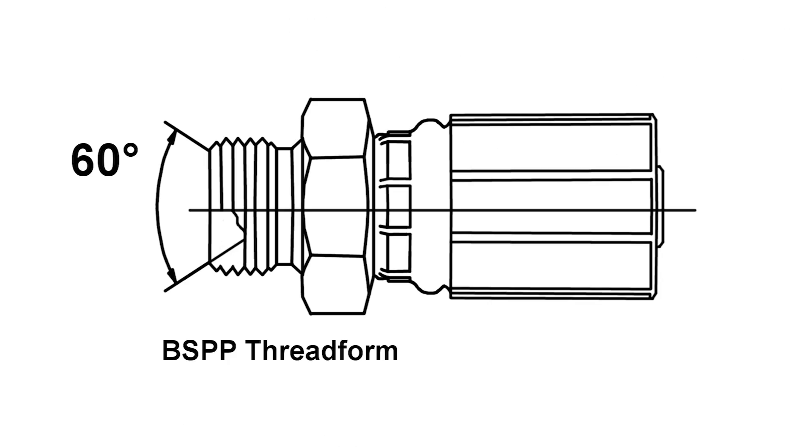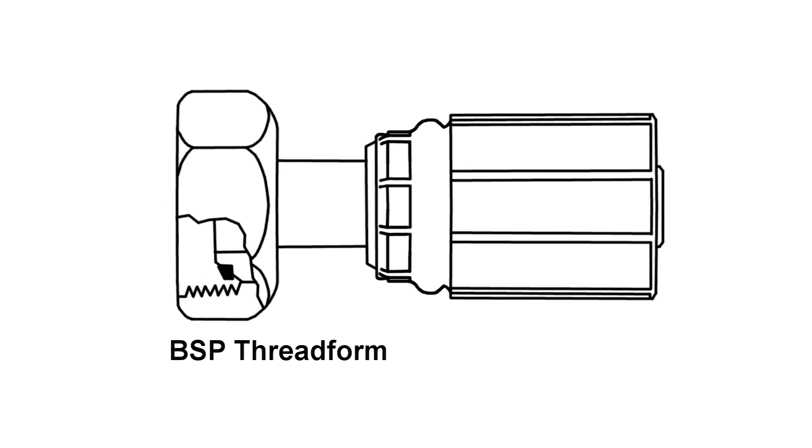British Standard Pipe is one of the more common thread types and can be identified by a 60 degree sealing cone on male and female fittings. Sometimes the female fitting will be fitted with an O-ring seal but this is not always the case.